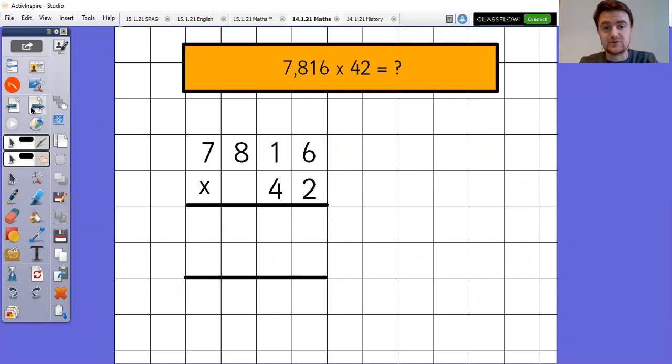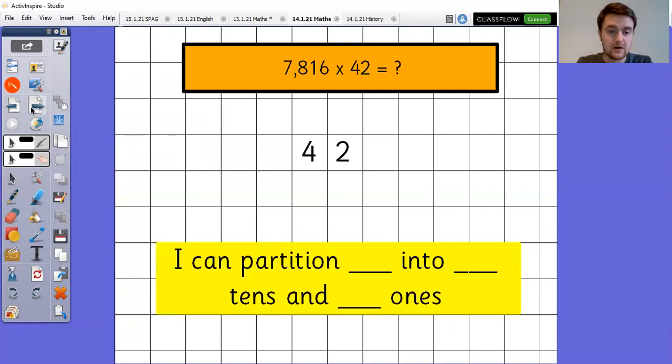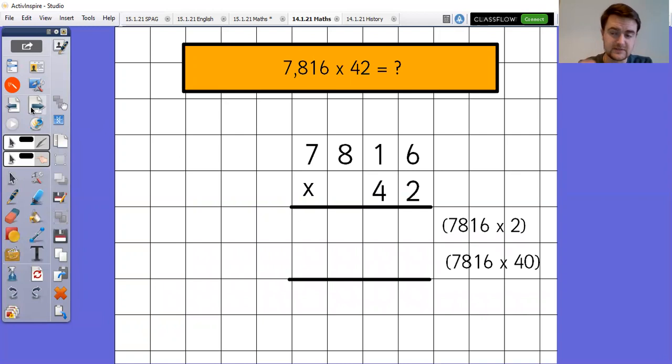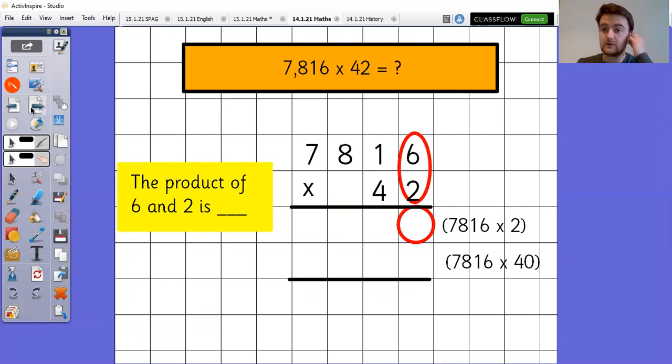So I've laid it out using the traditional column method style. I've left myself two rows worth of room because I'm multiplying by a two digit number. The first thing I'm going to do is I'm going to partition that bottom number. I can partition 42 into four tens and two ones, which means that my sum, this top row is going to be the same as 7,816 times two. And the bottom row is going to be the same as 7,816 times 40. So the product of six and two is 12. I can't fit 12 into one column, so I'm going to have to put the two in there. I'm going to carry the 10 ones and make it into one 10.